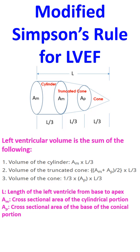The basic assumption in Simpson's rule is that the shape of the left ventricular cavity is a composite of a cylinder from base to the level of the mitral wall, a truncated cone from the mitral wall level to the level of the papillary muscles, and a cone from there to the apex. Total volume is the sum of these three components.